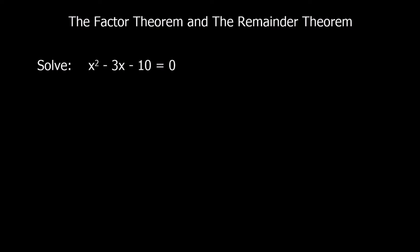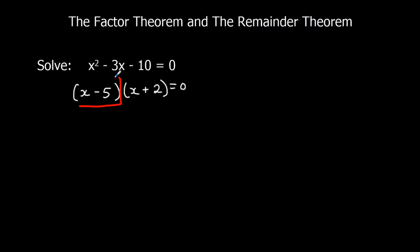We're going to look at the factor theorem and the remainder theorem. I've got an example of a quadratic to look at first, then we'll go on to do things that aren't quadratics. The quadratic is x squared minus 3x minus 10. Because it's a quadratic I can factorize it — what multiplies to make negative 10 and adds to make negative 3? That's negative 5 and positive 2, so the factors of x squared minus 3x minus 10 are (x minus 5) and (x plus 2).